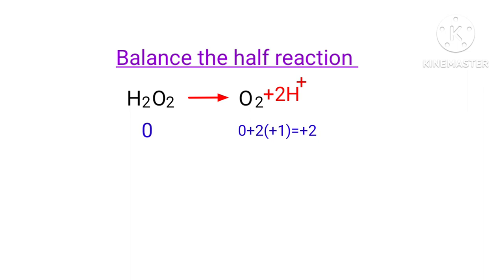To make them equal, you should add electrons as you can't add protons. So if you think of adding two protons to left side to make it equal to plus 2, it is wrong. But you can add two electrons to right side to make it equal to 0.